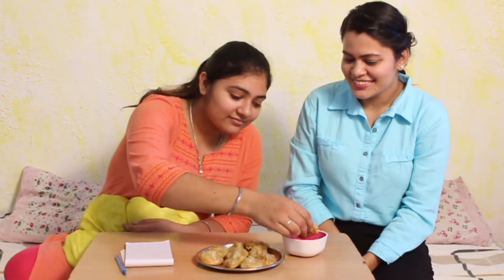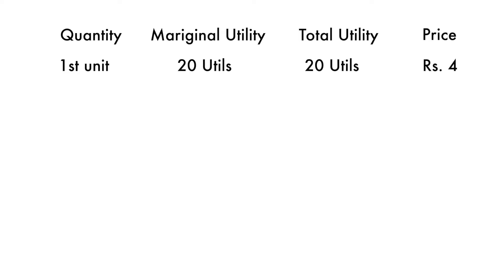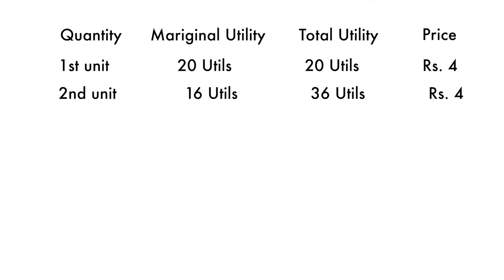So here we have a plate of momos. After eating the first momo, she is asked how many utils she assigns. She gives 20 out of 20 — so the first unit equals 20 utils. After eating the second momo, she assigns 16 utils. We can already see that the marginal utility is declining — from 20 for the first unit down to 16 for the second unit. Each dumpling is priced at 4 rupees, so for the first unit she got 20 utils paying only 4 rupees — that is a very good deal.